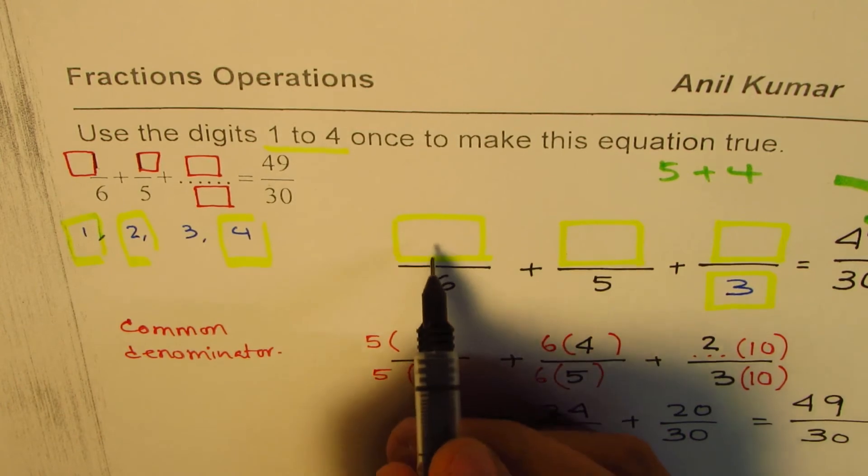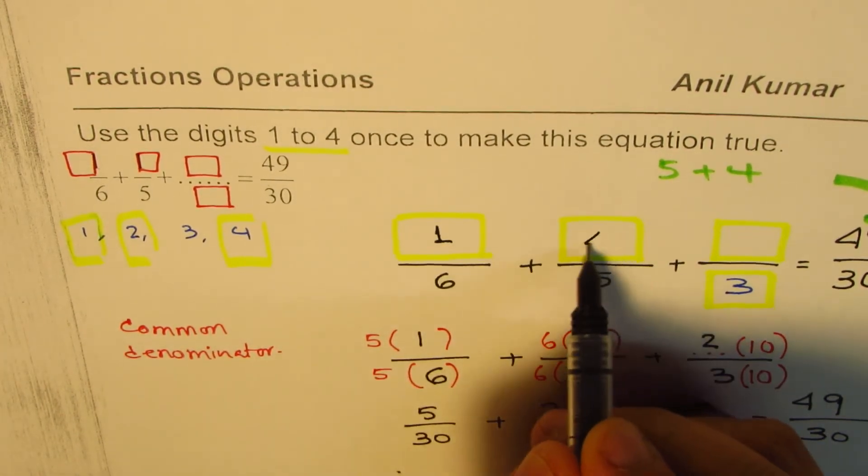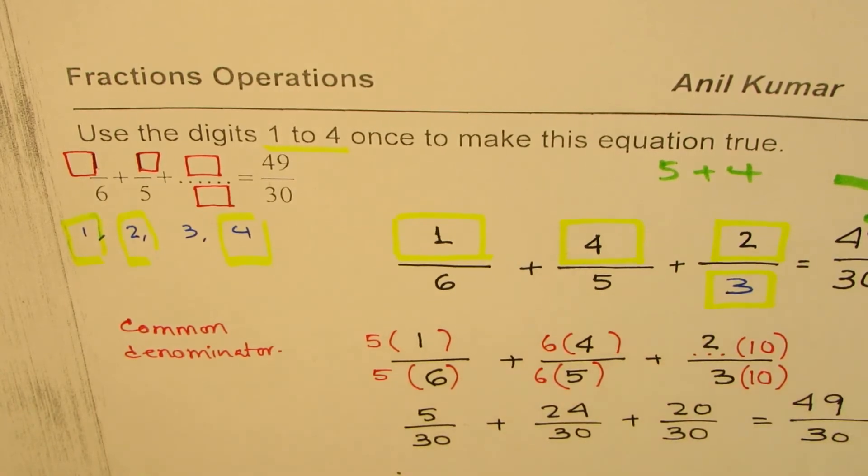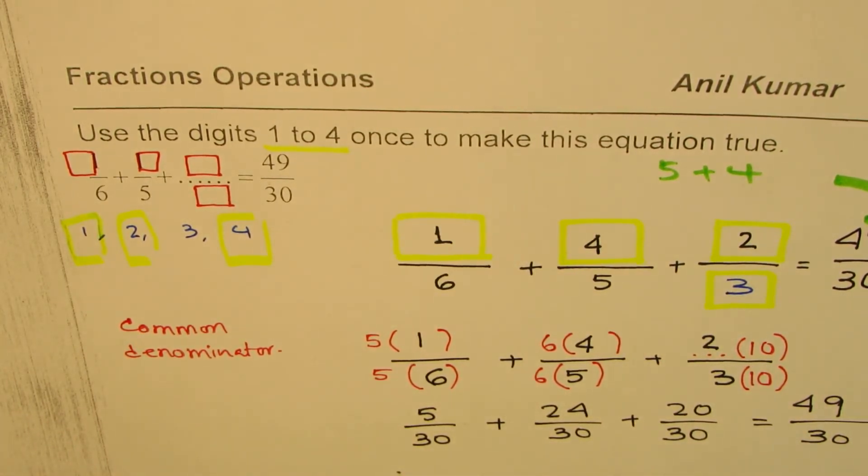That is indeed denominator is 30, common denominator. 20 plus 24 is 44 plus 5 is 49. Do you understand how we approach the answer? So what we found is that we could place 1 here, 4 in this place, 2 here and 3 there to get our answer.